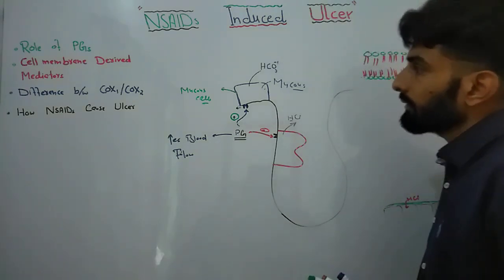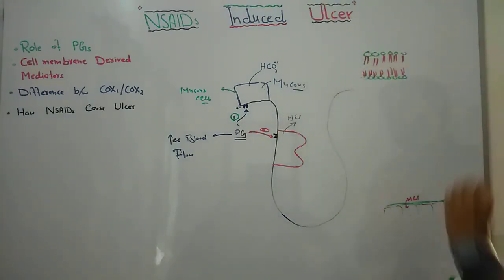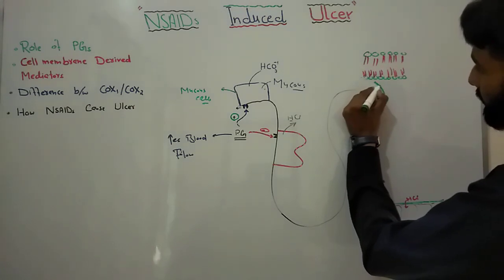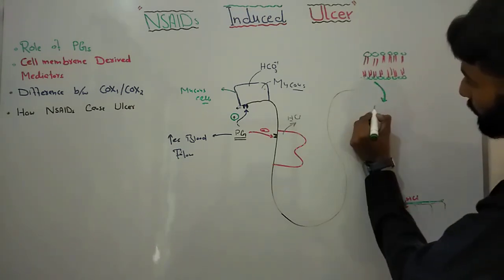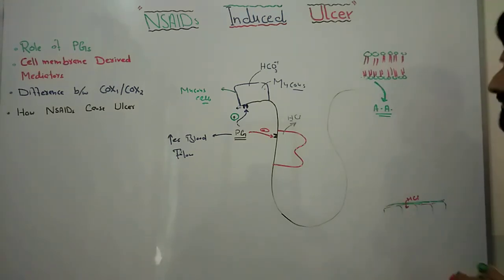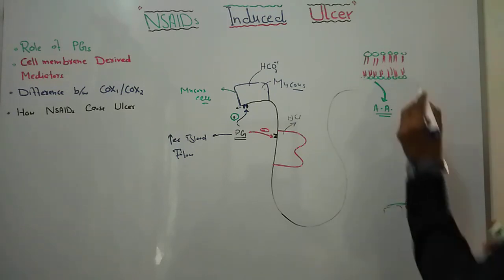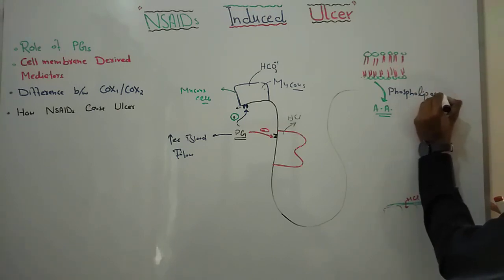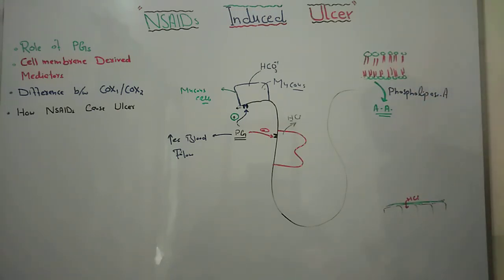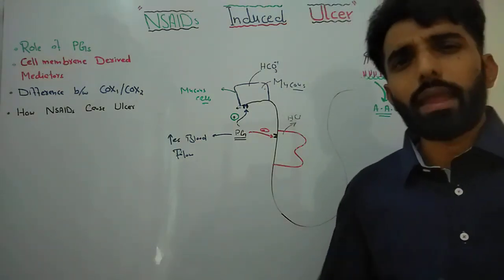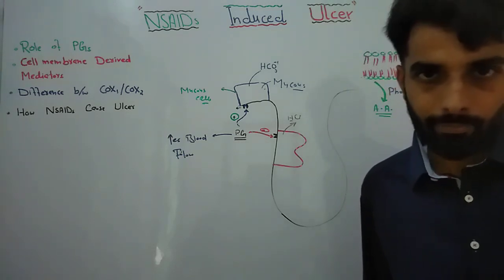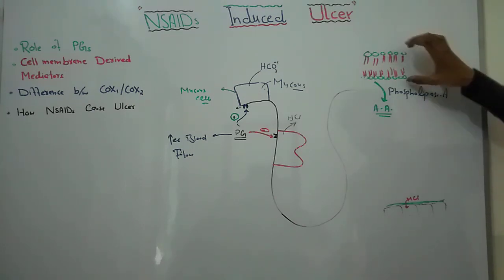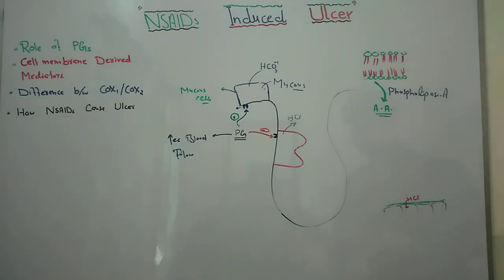Now let's see how prostaglandins are formed. The phospholipid bilayer membrane is converted into arachidonic acid with the help of a very important enzyme — phospholipase A. Phospholipase A can be activated in response to any injury, damage, or inflammation to the cell. When there is injury or damage to the cell, phospholipase A will be activated and it will convert the phospholipid bilayer membrane into arachidonic acid.